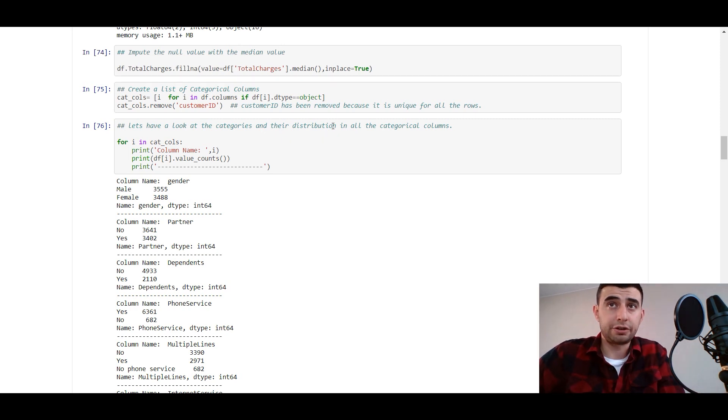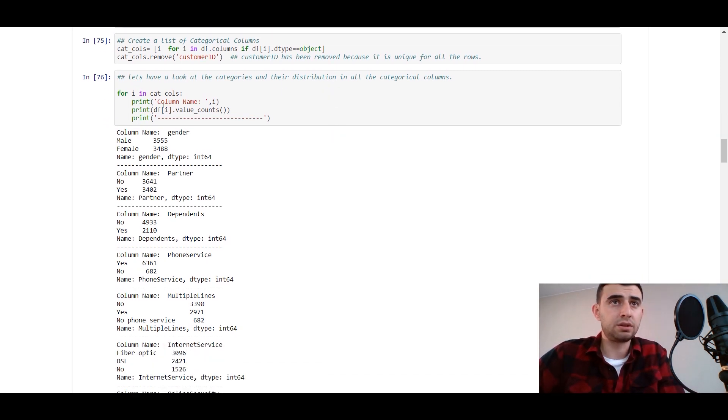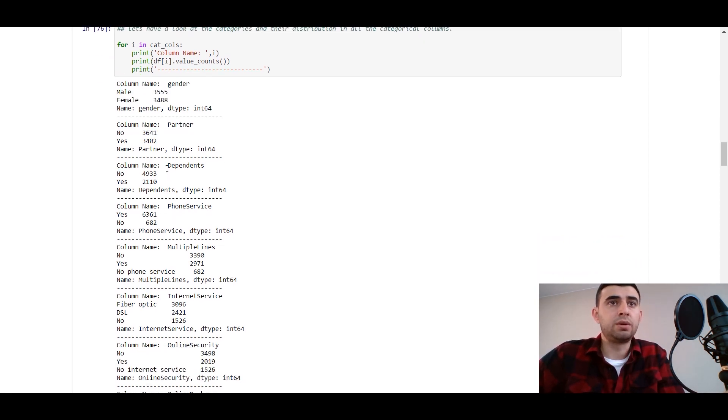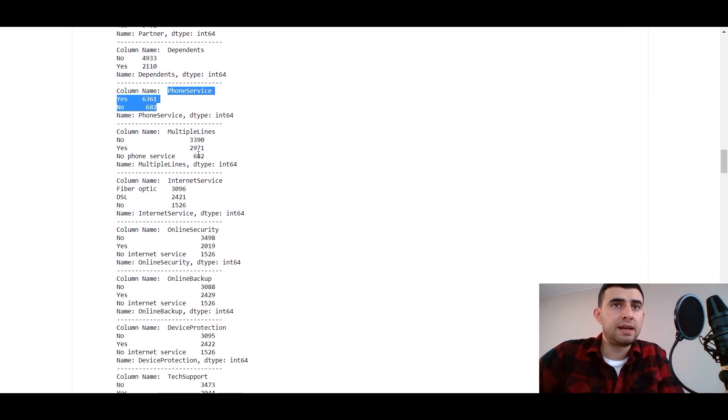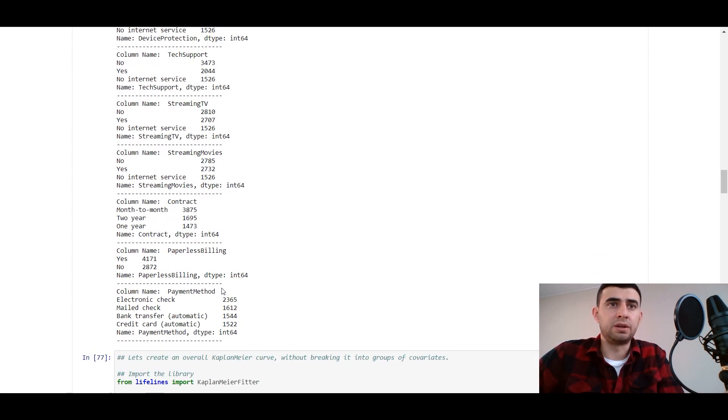Remove customer ID column because customer ID is unique for all the rows and we get no additional knowledge from it. Our model wouldn't benefit. Let's have a look at the categories and the distribution in all the categorical columns. For each different column, print the column name and value counts on it.